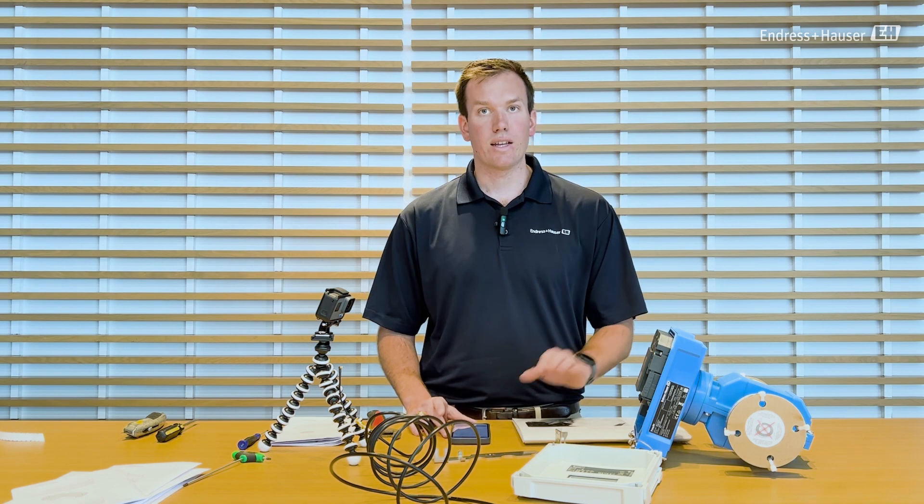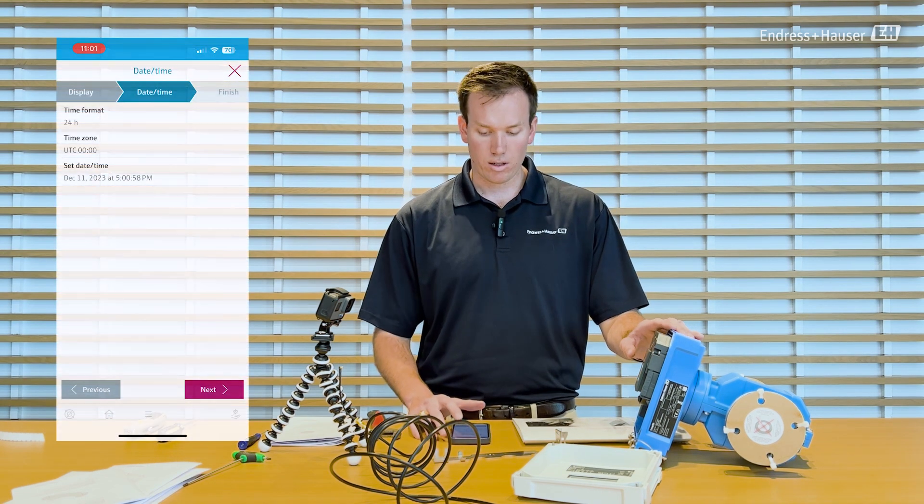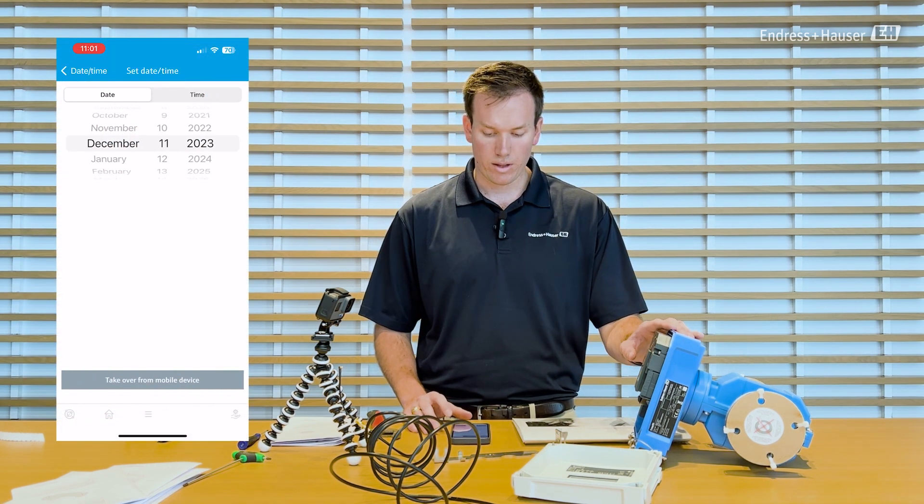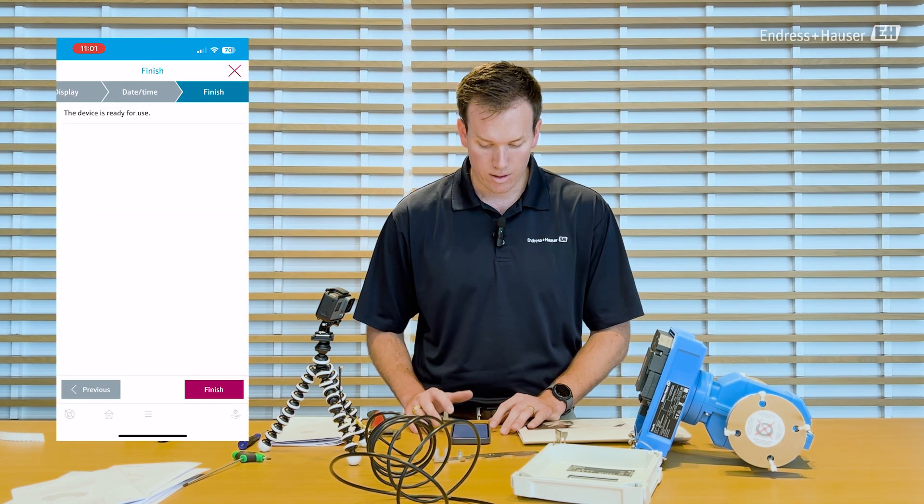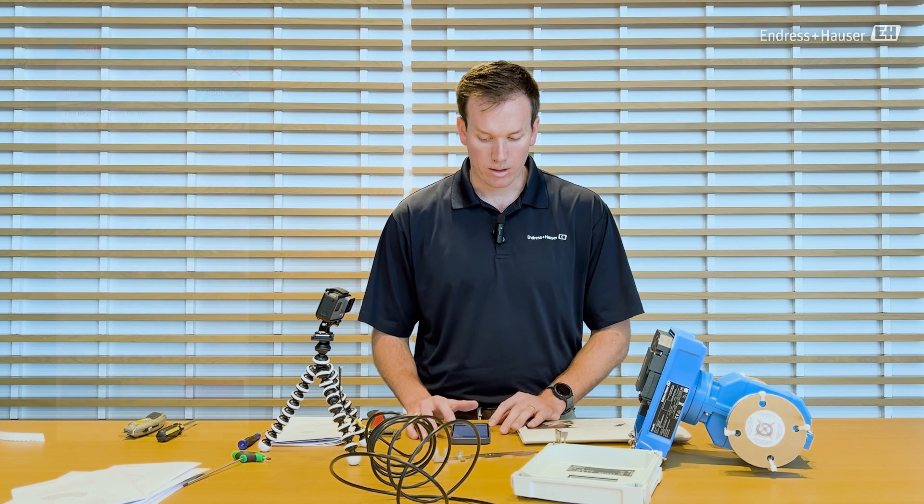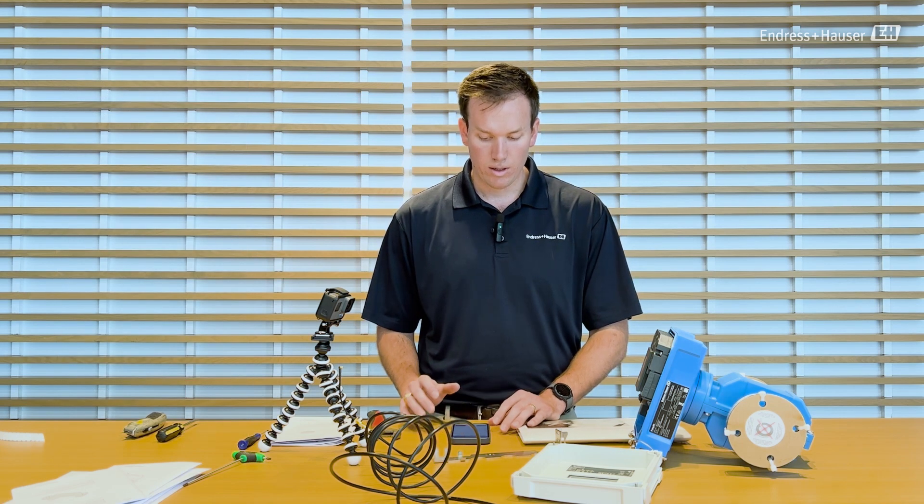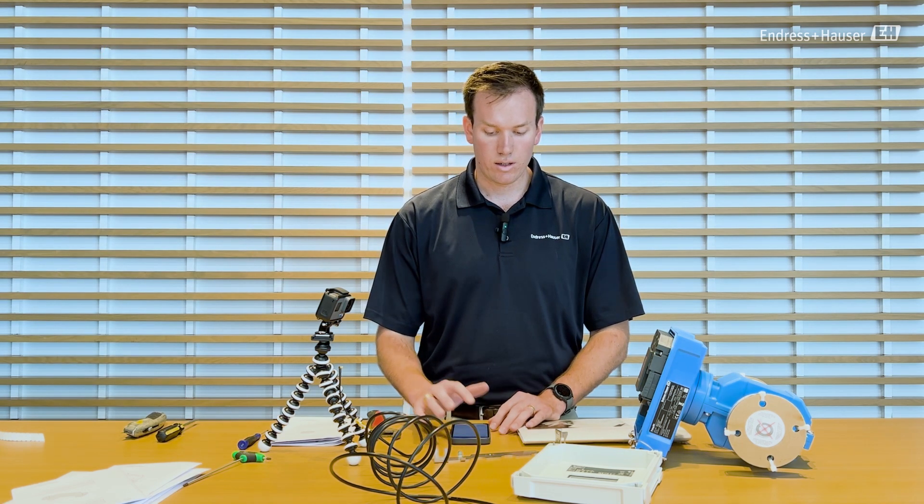For setting the date and time on the meter, it has a real time clock in it. I'm just going to have it take over that date and time from my mobile device here, so it saves that, which will automatically pick the time zone and then set up the device for use.